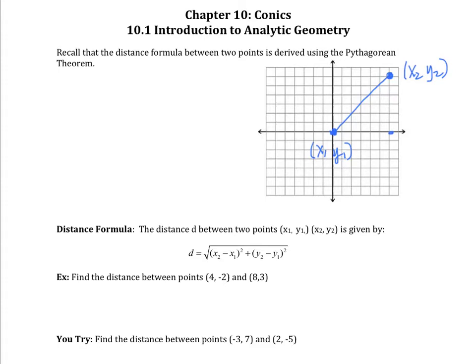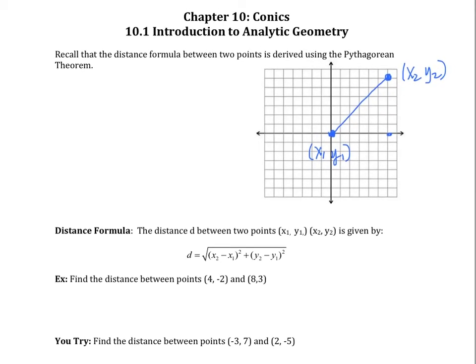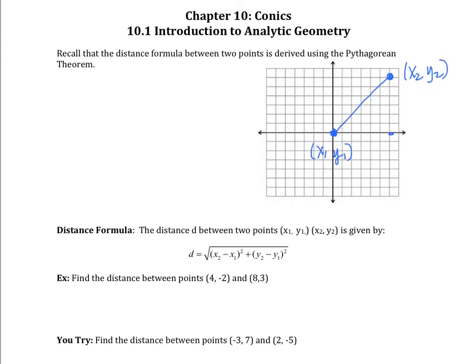We want to think about how the distance formula between two points is derived using the Pythagorean theorem. I have here on this coordinate plane two points — one is at (x1, y1) at the origin, and the other one's up in the corner, which we'll call (x2, y2). When I want to look at the distance between these two points, I look at the triangle that they make. This here is the distance between the two y-values, y2 minus y1, and the horizontal distance is x2 minus x1. So when I want to find this distance — the blue line —